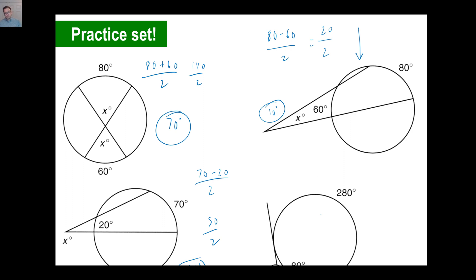Last one. Again, they intersect outside here, so we have 280 minus 80, and then divided by 2. And by the way, look at this angle. Here's a 90 degree angle, right? You can probably guess it's a little more than 90 degrees. So 280 minus 80 is 200, divided by 2, obviously 100 degrees. There you go. All right, hope you guys enjoyed that, have a good day with it.